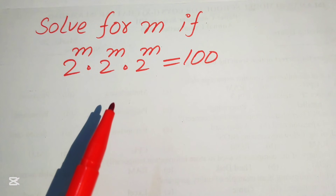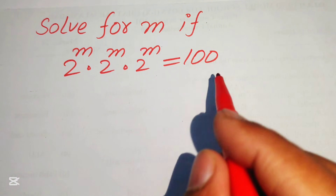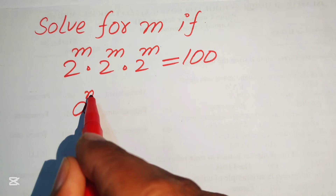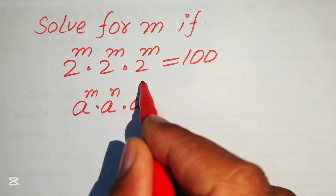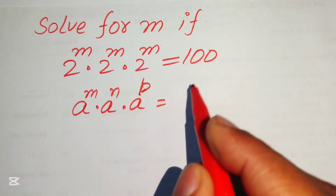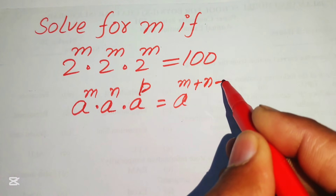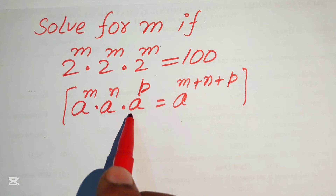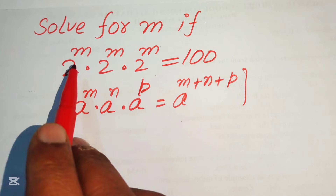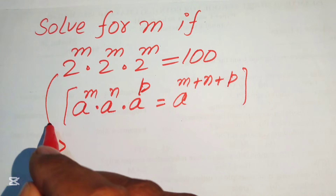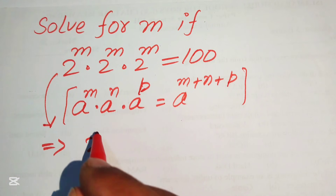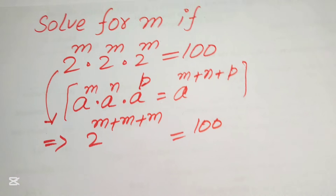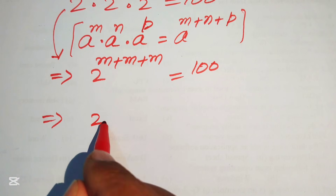The very first step is to use the exponent law. We know that a to the power of m times a to the power of n times a to the power of p equals a to the power of m plus n plus p. The bases must be the same, then you add all the exponents. So this equation is written as 2 to the power of m plus m plus m equals 200.